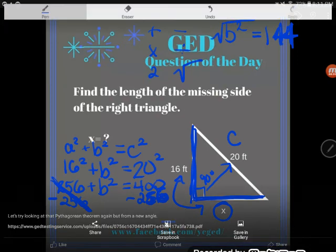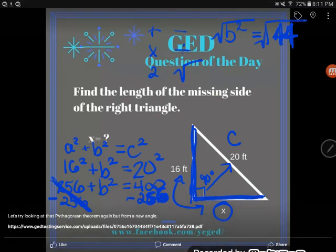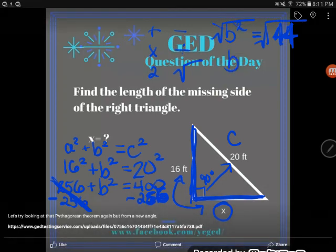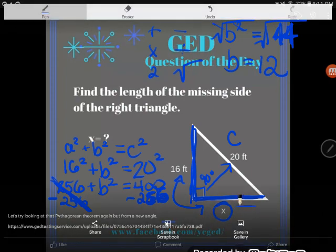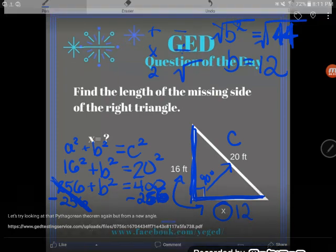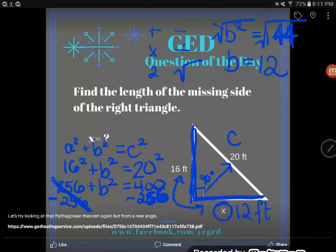Again, the rule of algebra is you can do whatever you want as long as you do it to both sides. So I'm going to take the square root of both sides. On this left hand side, square and square root will cancel leaving me with just B. And on this right hand side, there's the math to do. The square root of 144 is 12. And so I find out that this X, this missing unit is 12. But 12 what? All these other units were in feet. This will also be 12 feet.